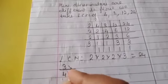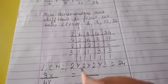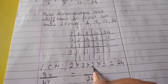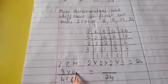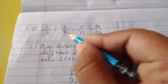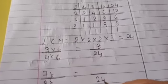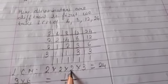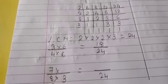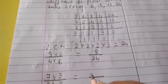Now first fraction is 3 upon 4. We want here denominator 24. With 4 what we will multiply to get 24? See 2 to 4, remaining 2 numbers: 2 times 3 is 6. So we will multiply 6. 4 times 6 is 24. In the numerator also we will multiply: 3 times 6 is 18. Now next fraction is 7 upon 8. We want denominator 24. 8 is there; 2 to 4 to 8, which number is left? 3. So with 8 we will multiply 3. In the numerator also: 7 times 3 is 21.